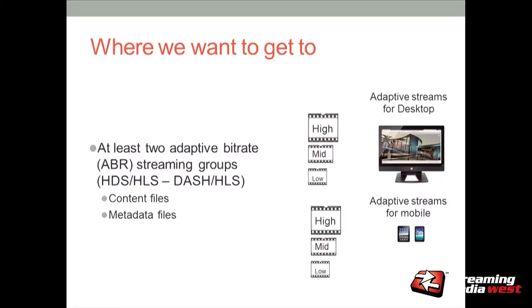My assumption is that we're going to want to get to at least two groups of adaptive streams. If you're doing this today, it could be a Flash set of streams and an HLS set of streams. If you're doing this in 12 months, it could be DASH and HLS. You want two sets of adaptive bitrate streams so you get ABR video to your different target markets.